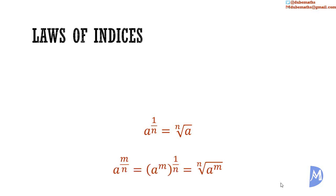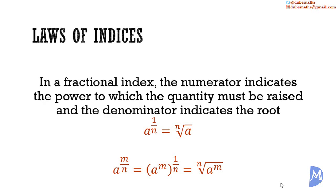It follows that a to the m over n power — which is the same as a to the m power, all raised to the power of 1 over n — is equal to the nth root of a to the m power. That is, in a fractional index, the numerator indicates the power to which a quantity must be raised, and the denominator indicates the root.